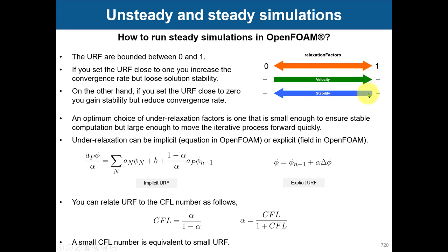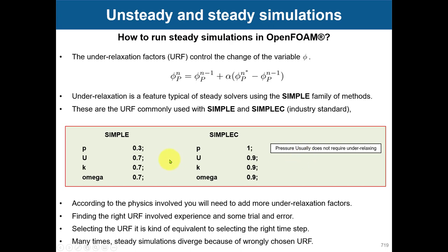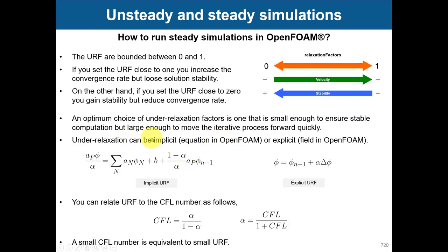Closer to zero you get more stability; closer to one you lose stability. So it is a compromise. Setting under-relaxation to one is not recommended — it's better to use lower values. There are two ways of under-relaxation: implicit, called 'equation' in OpenFOAM, and explicit, called 'fields' in OpenFOAM. You can also relate the under-relaxation to the CFL number: very small under-relaxation is like a small CFL number — slow but more stable — and large under-relaxation means large CFL number, meaning faster convergence but less stability.